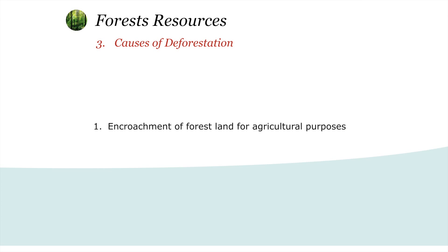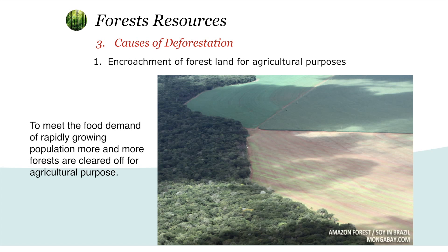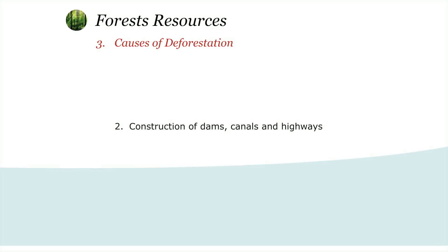What are the causes of deforestation? The first one is encroachment of forest land for agriculture purposes. Our agricultural lands are expanding day by day, and they are getting land from the forest only. So the expansion of agriculture reduces the forest — that is one of the major causes of deforestation. The second is construction of dams, canals, and highways.